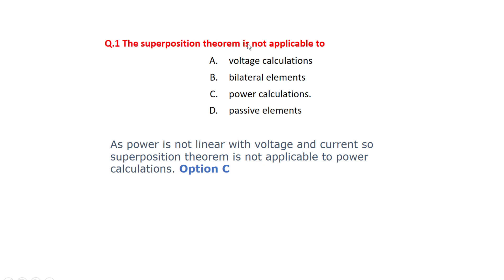The first question: the superposition theorem is not applicable to which of the following? Options are: voltage calculation, bilateral elements, power calculations, and passive elements. The correct option is C — power calculations — because power is not linear with voltage and current, so the superposition theorem is not applicable to power calculations.